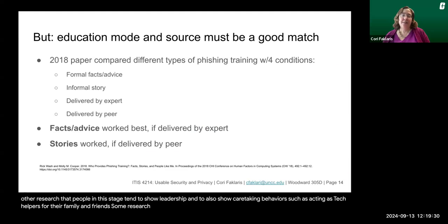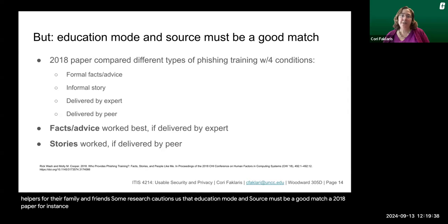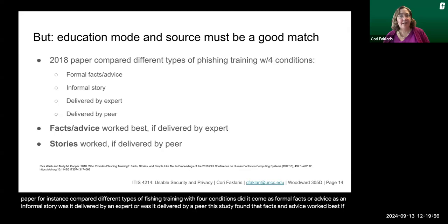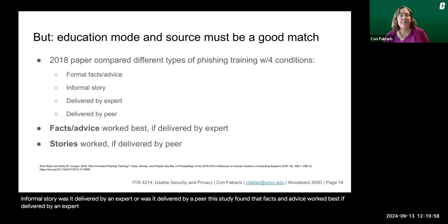Some research cautions us that education mode and source must be a good match. A 2018 paper compared different types of phishing training with four conditions: formal facts or advice versus an informal story, delivered either by an expert or by a peer. This study found that facts and advice worked best if delivered by an expert, however stories worked best if delivered by a peer.